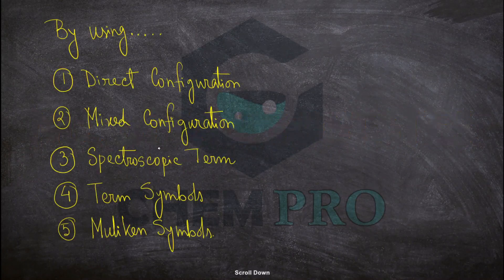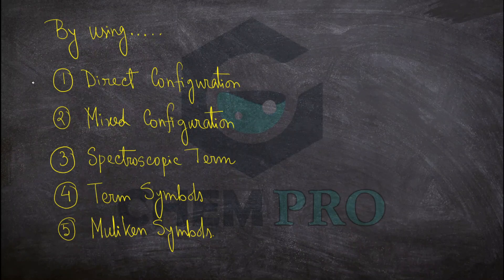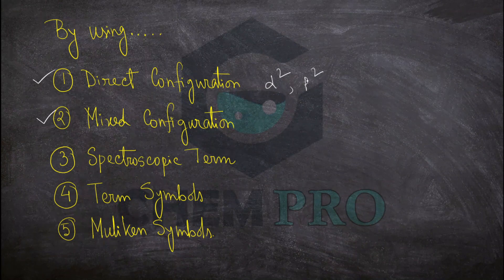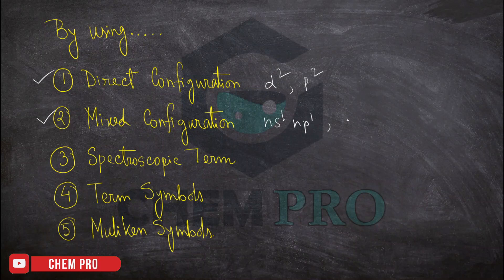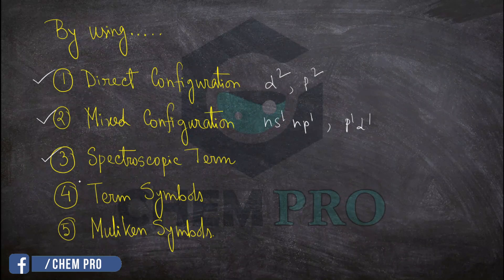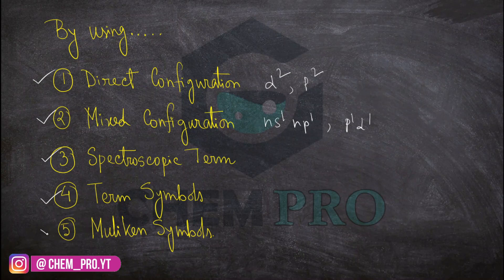So there are five types of ways for finding the number of microstates. We can find the number of microstates by using the direct configuration or the mixed configuration — like the direct configuration such as d2 or p2, and the mixed configuration like ns1np1 or p1d1 — and also by using the spectroscopic term, the term symbol, and finally the Mulliken symbols.